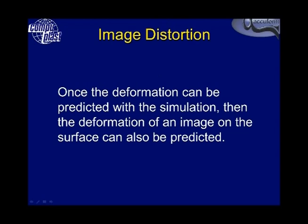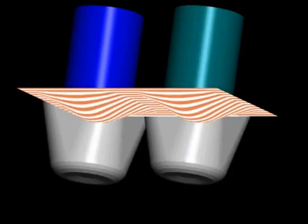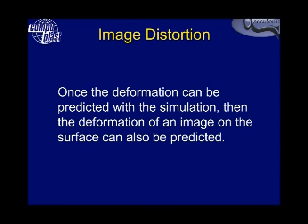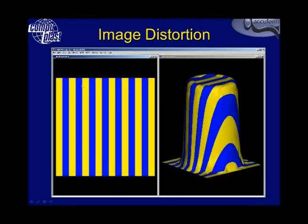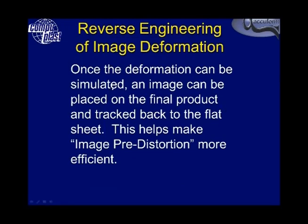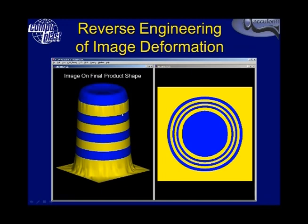The simulation software can also help with image distortion — once deformation is predicted, the deformation of an image on the surface can also be predicted. For example, starting with stripes on a flat sheet and forming a cup, we can see how those stripes are deformed. More interestingly, once the deformation is simulated, an image can be placed on the final product and tracked back to the flat sheet, making image pre-distortion much more efficient.